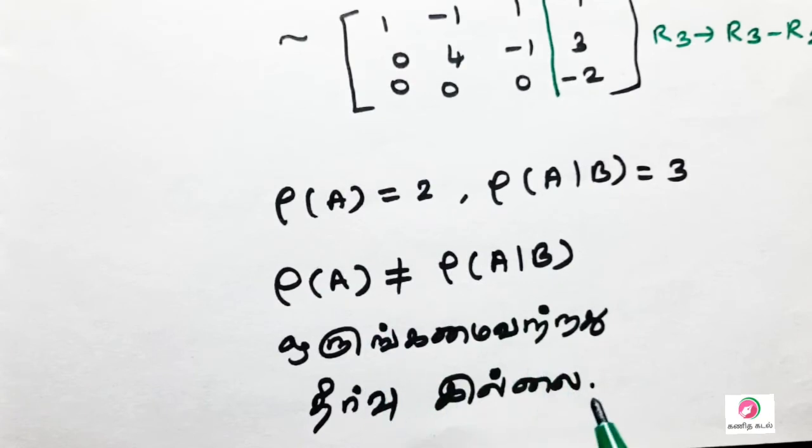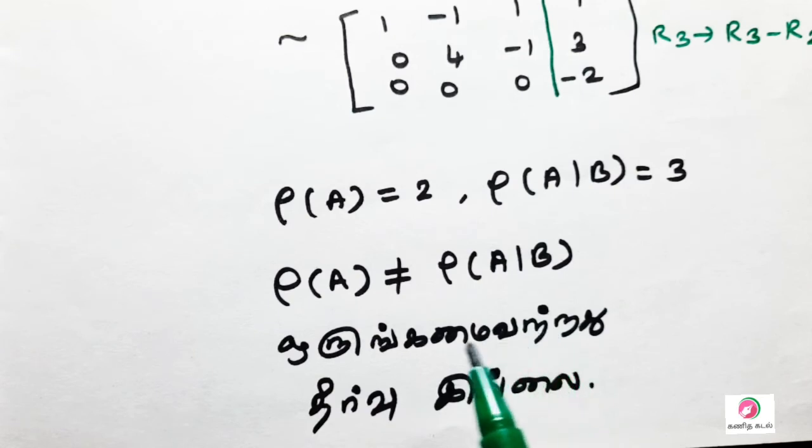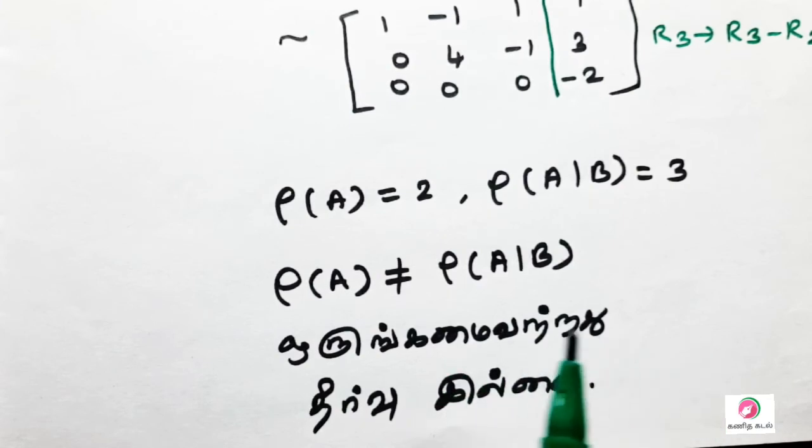Inconsistent means there is no solution. The meaning is that if we substitute xyz values in the equation, it will not be satisfied. If there is a unique solution, we can substitute the value and it will satisfy the equation. But in this case, inconsistent, no solution. There is no solution.